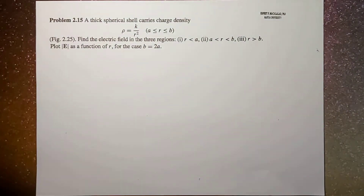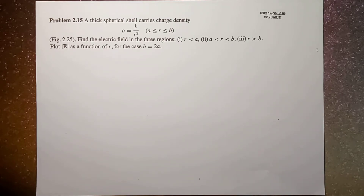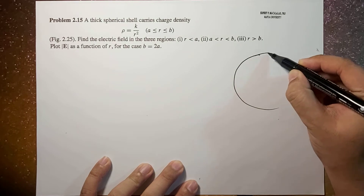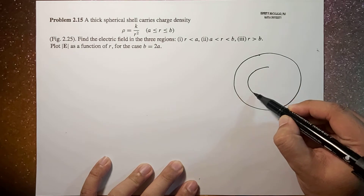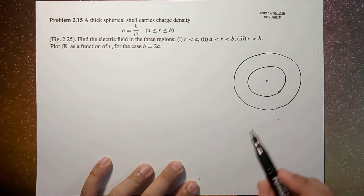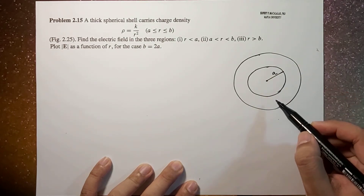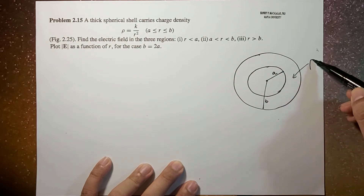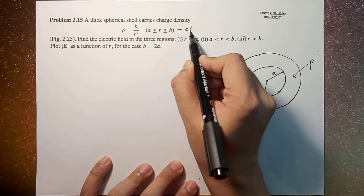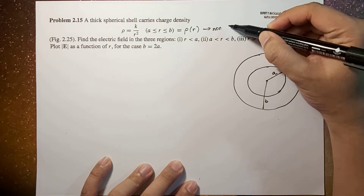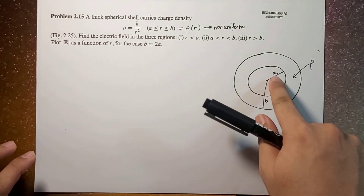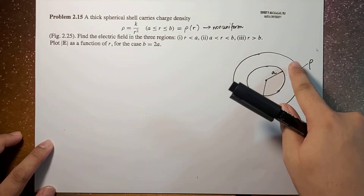Here we're going to select three regions, as mentioned. So let's start with the first region, r less than a. If we have a thick spherical shell — this is the outer layer of the spherical shell, and this is the inner layer — this is the center of the sphere. This will be a, and this will be b. So the charge is within this region. The charge is a function of distance, so this is non-uniform. We have three regions: one is inside the hollow part, then within the shell, and then outside the shell.